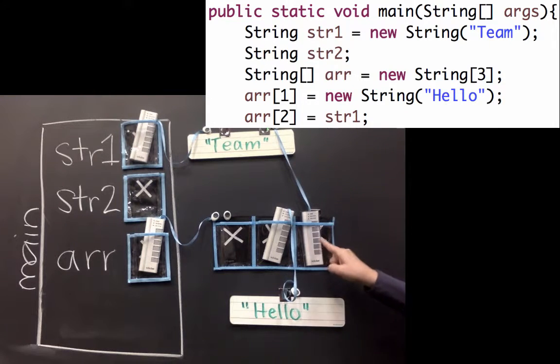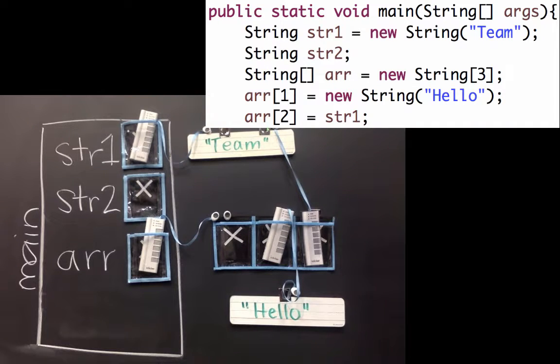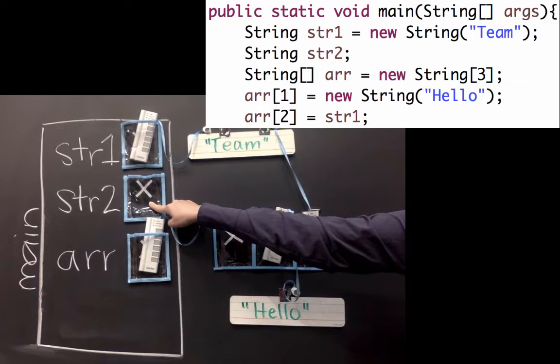I'm sorry if it's a little distracting that this one's paper and this one's plastic, but I ran out of these. So remember when we made this new array, we hadn't created any strings, and we hadn't set any of those values. So they all started at that default null, just like our string 2 did.